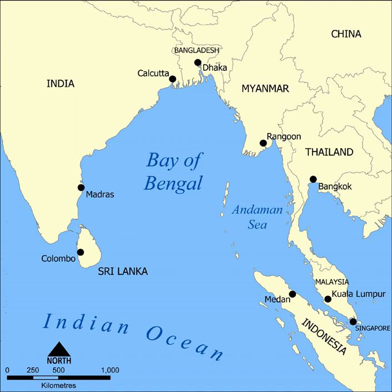The Bay of Bengal is the northeastern part of the Indian Ocean, bounded on the west and northwest by India, on the north by Bangladesh, and on the east by Myanmar and the Andaman and Nicobar Islands of India. Its southern limit is a line between Sri Lanka and the northwesternmost point of Sumatra. It is the largest water region called a bay in the world, with countries in South Asia and Southeast Asia dependent on it.